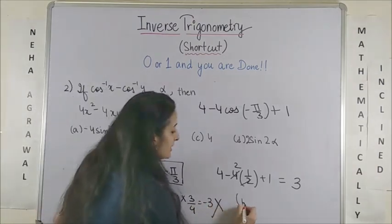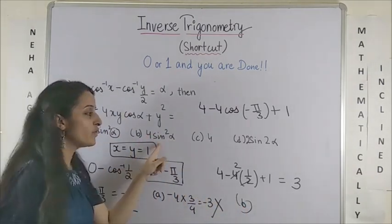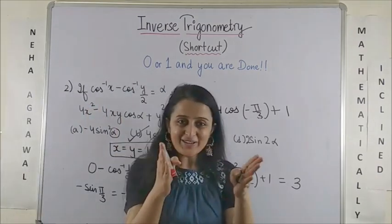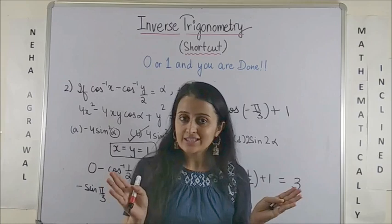My option B is 4 sin square alpha which will be 4 into 3 by 4. Bingo! That's your correct answer. Wasn't this easy?